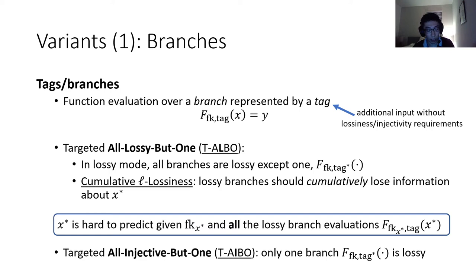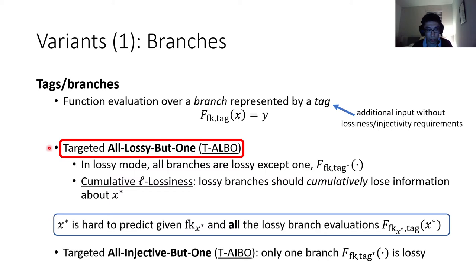We also define a dual notion called target-all-injective-but-one, where again in injective mode everything is injective, but in lossy mode there's only one special branch that is lossy and the rest are injective. Through this talk, we'll mainly focus on the notion of targeted all-lossy-but-one functions — that's what you should keep in mind.